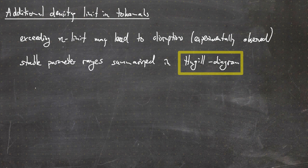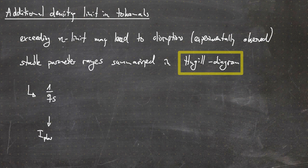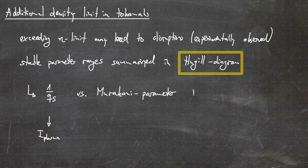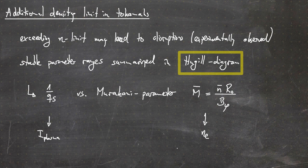What is that diagram? On one axis we plot 1/q_s, which is basically proportional to the plasma current. On the other axis we plot the so-called Murakami parameter. The Murakami parameter is defined as m-bar equals n-bar times R_0 over B_phi. That basically comes down to the plasma density together with machine parameters.